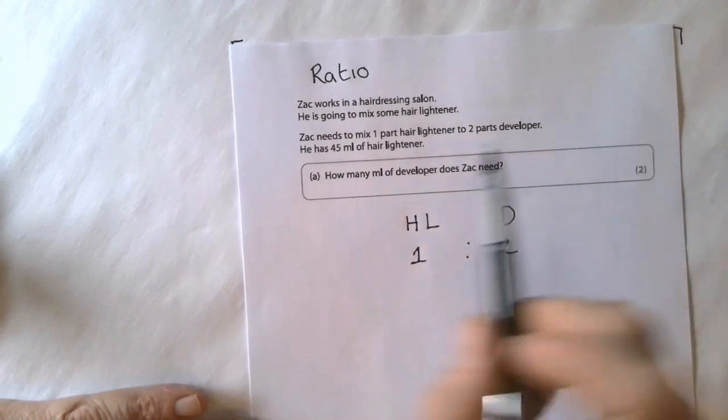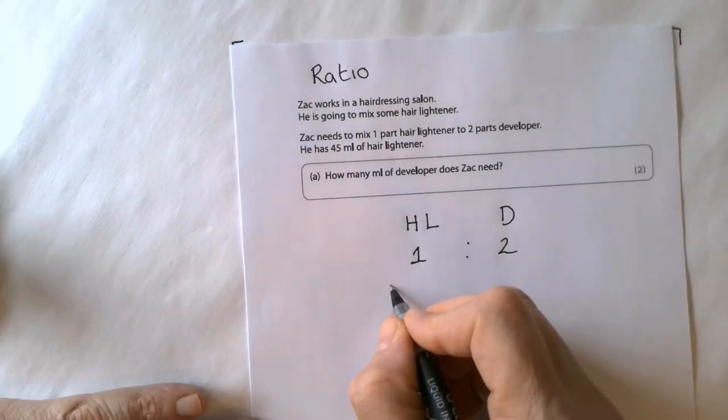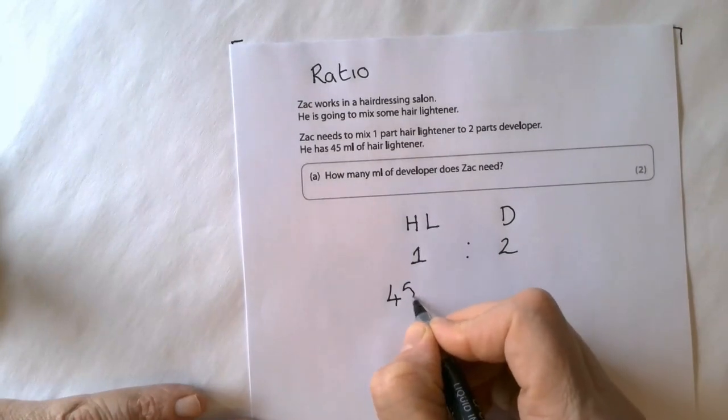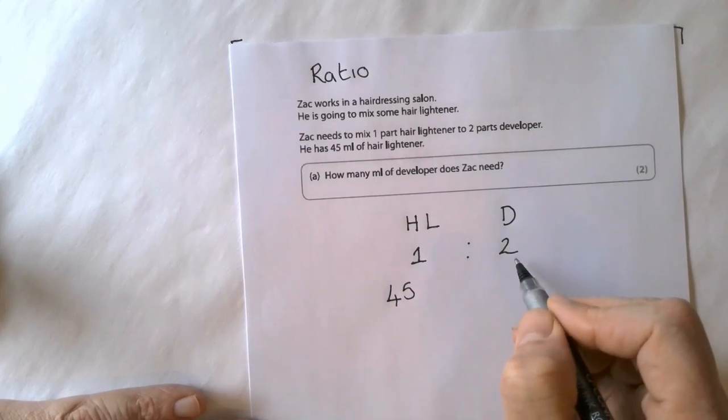Now it states that he has 45ml of hair lightener, and he needs to find out how much developer he needs.